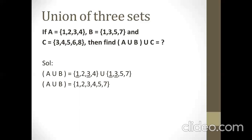Now, the first element is 1 — common to both, so we write it once. Then we have 2. Then 3 is common to both, we write it only once. Then we have 4. After 4, we have 5 and 7, which are elements of set B, and we will write them in A union B. So set A union B contains 1, 2, 3, 4, 5, 7.